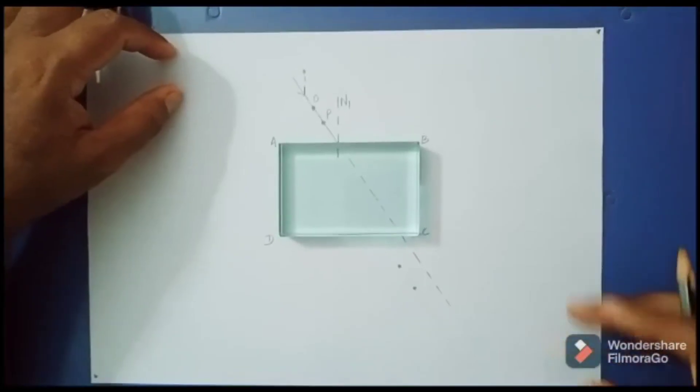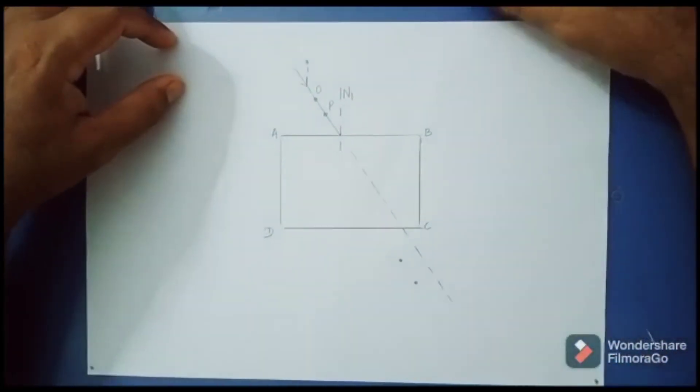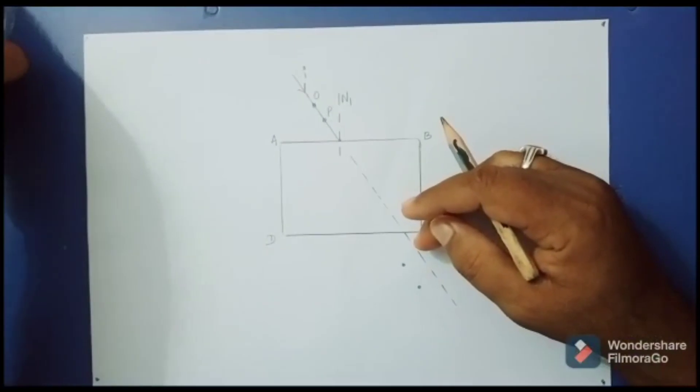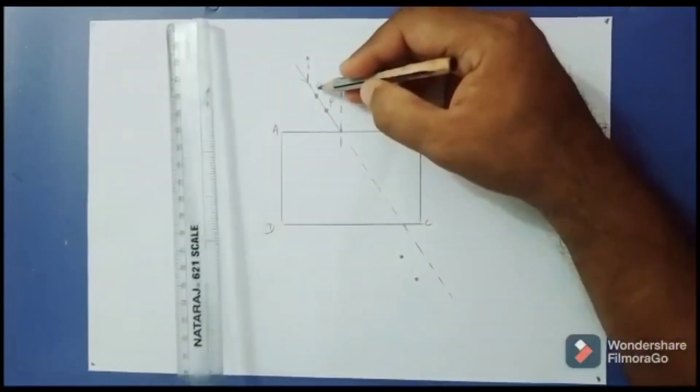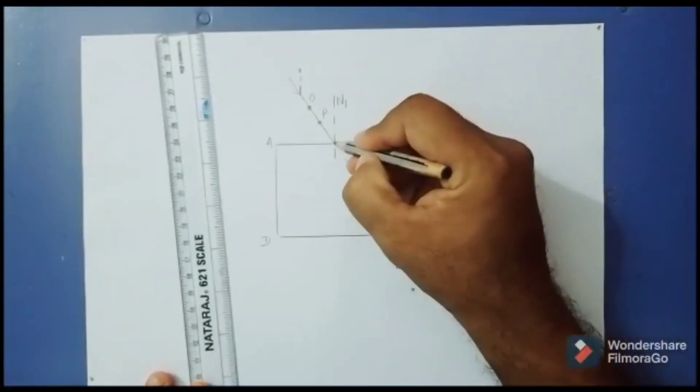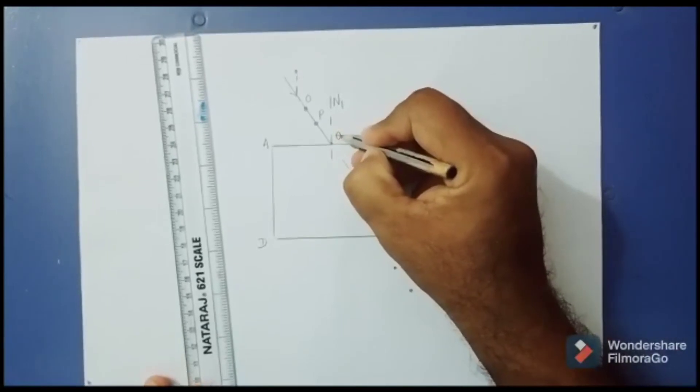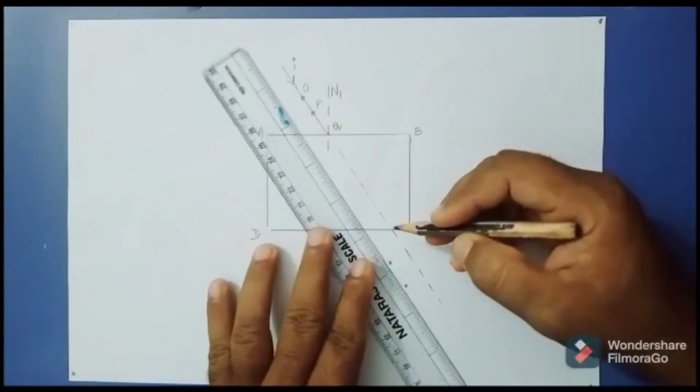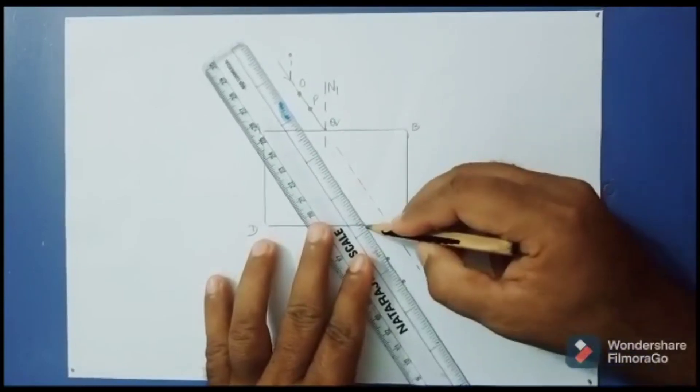Now remove the glass slab. Let us consider this point as O, P. This intersecting point as Q. Now let us join these two pins to the side CD.